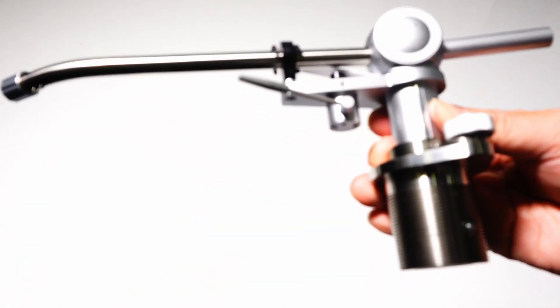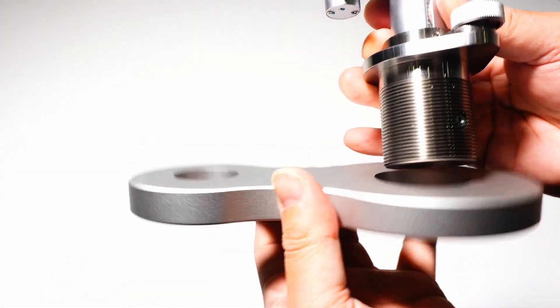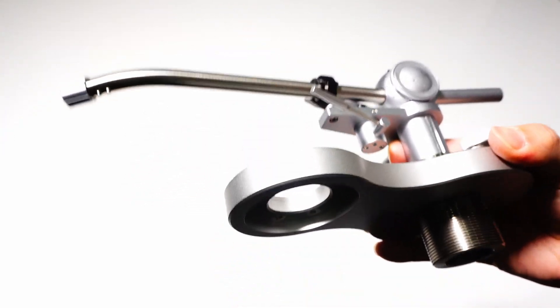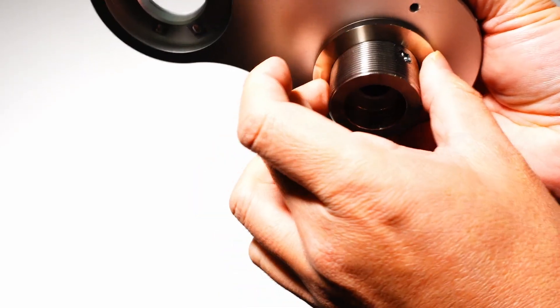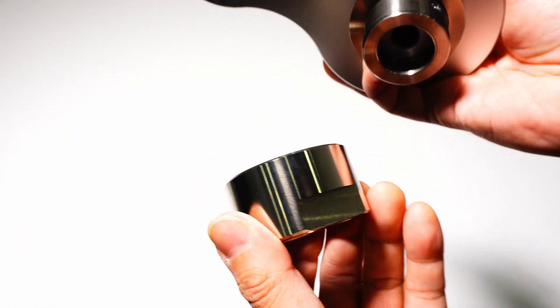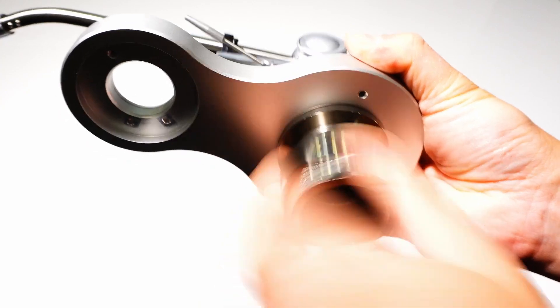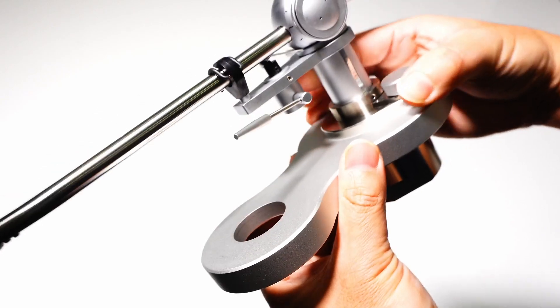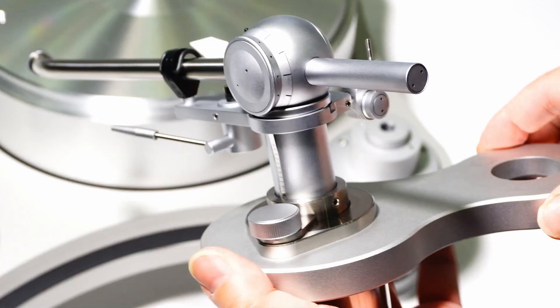Attach the arm base to the tonearm. Insert the tonearm from the top of the arm base and attach the washer and nut. Then attach the tonearm assembly on the arm post.